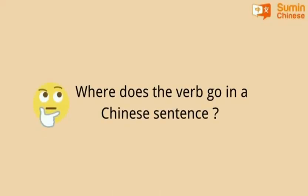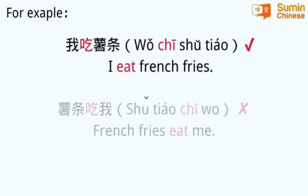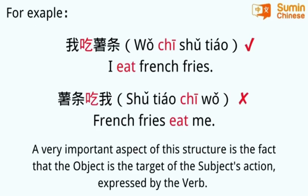Where does the verb go in a Chinese sentence? To express a statement of action, you should keep in mind the basic structure of any sentence in Chinese. The common Chinese sentence structure is: subject plus verb plus object.